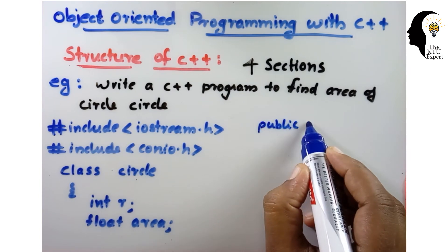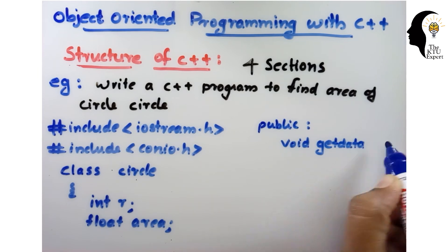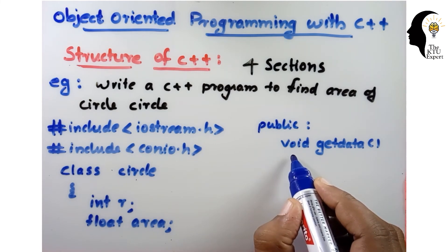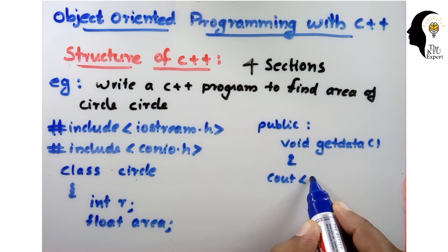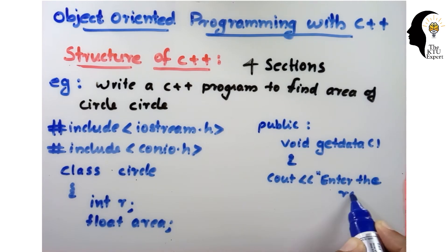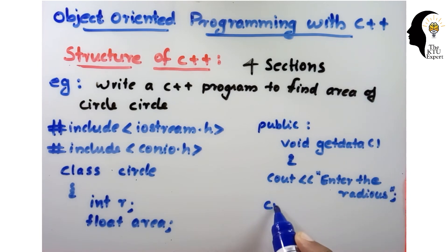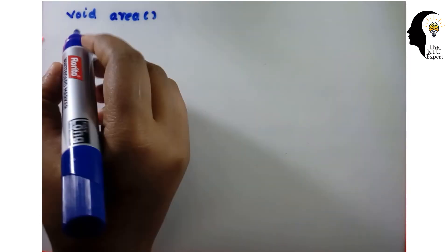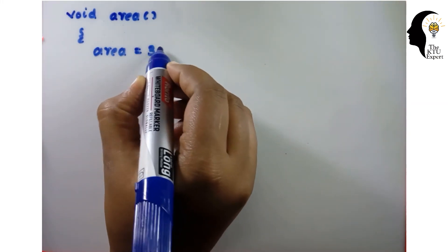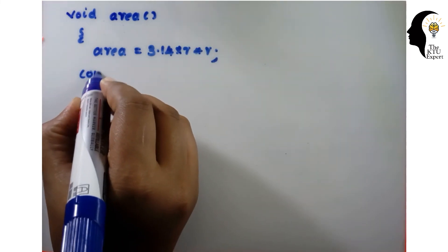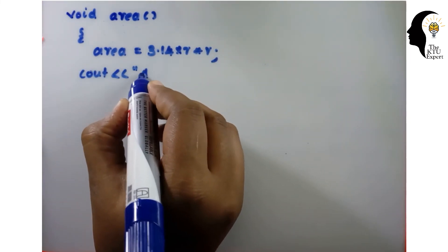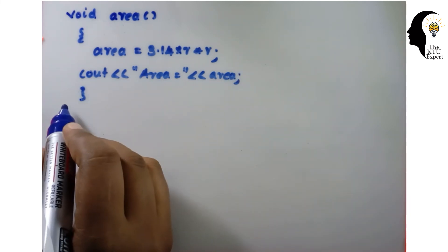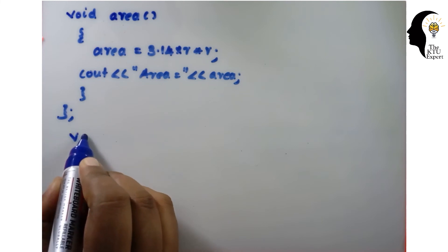In the public section, we write the function void getData(). Inside it, we use cout to display 'Enter the radius' and cin to input the value of r. The next function is void area(), which calculates the area of the circle: area = 3.14 * r * r (that is pi r squared). Then cout displays the area value: area = area. Then we close the class.